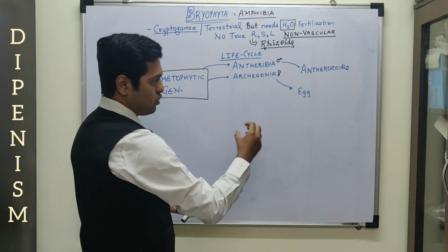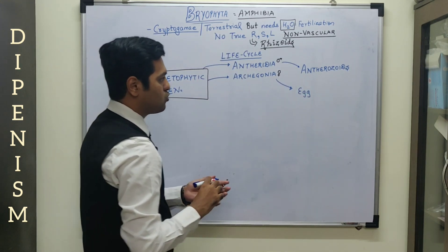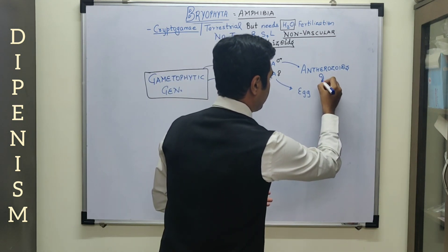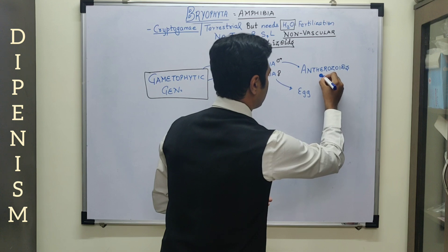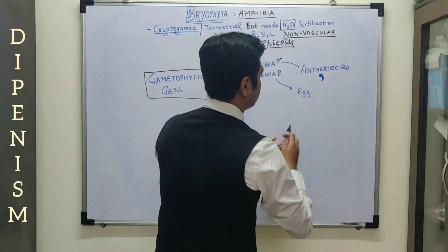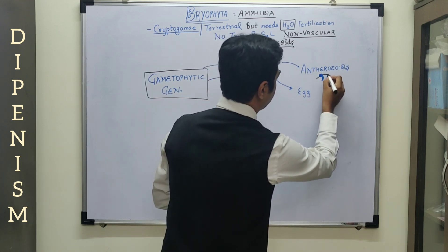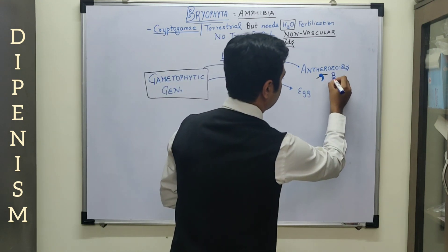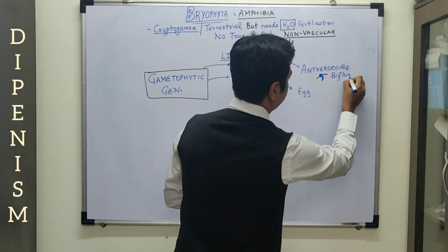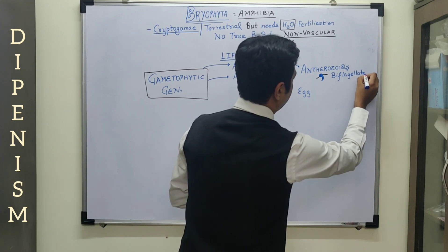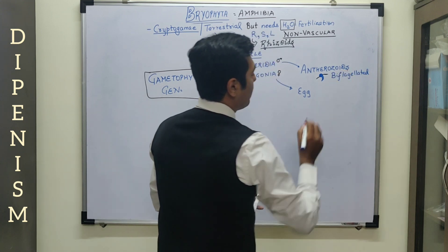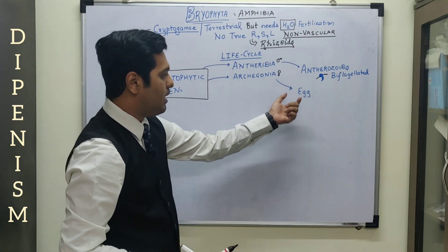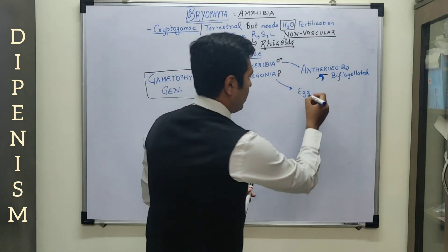Now, the anthrozoids which are produced are mainly comma-shaped. So remember the shape — that is the comma-shaped anthrozoids. And they also consist of locomotory structures that is the flagella, and there are two flagella present, so it is known as biflagellate. So it is a biflagellated male gamete, and thus it is a motile male gamete. Whereas the egg is non-motile in nature.